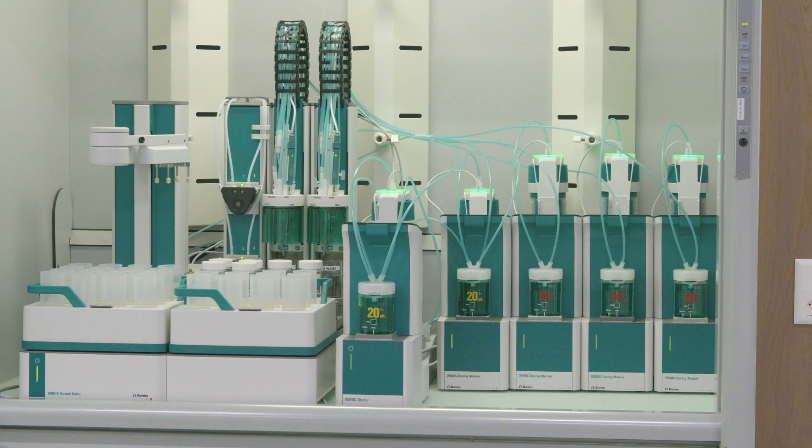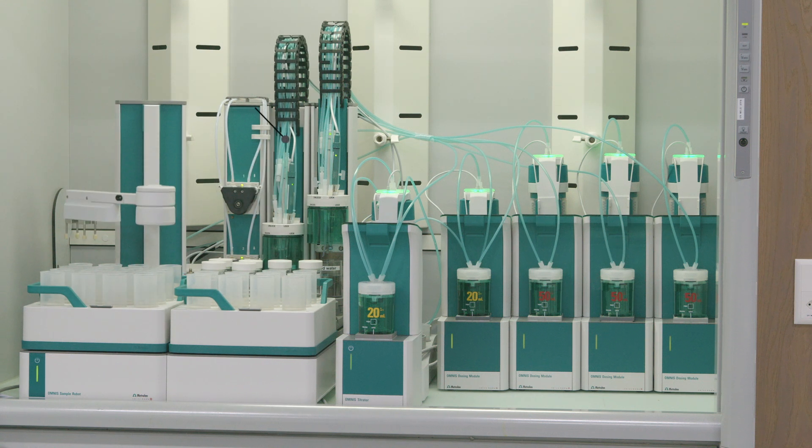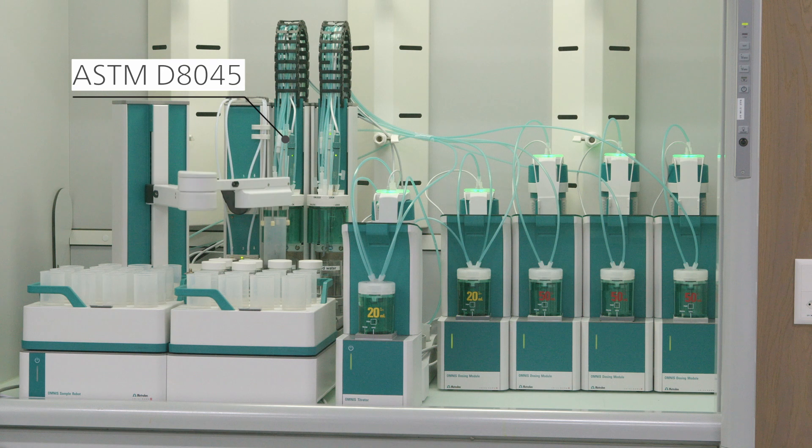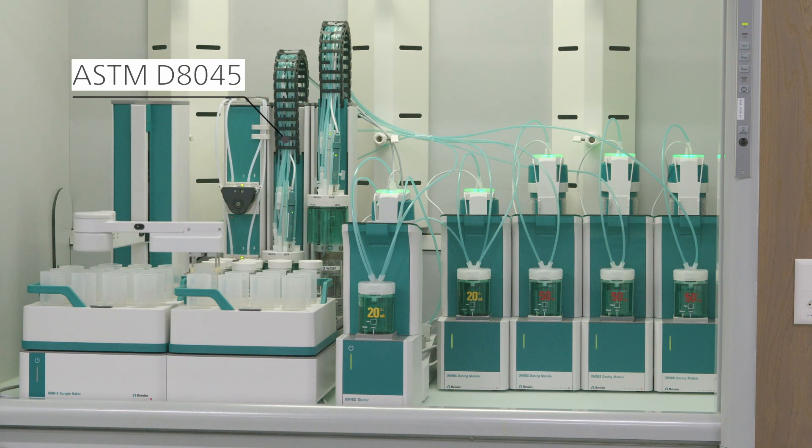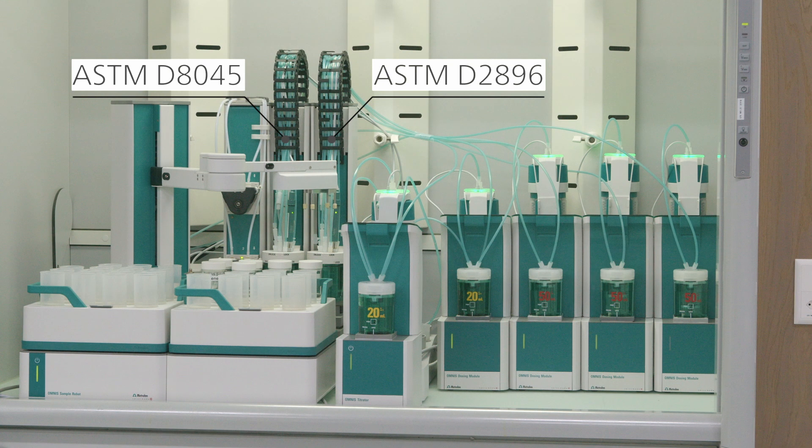If you have a high sample throughput, you can automate your system with an omni-sample robot. On one workstation, you can determine the acid number thermometrically according to ASTM D8045, and on the second workstation, the base number can be determined potentiometrically according to ASTM D2896.